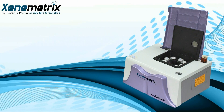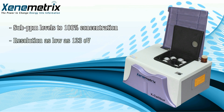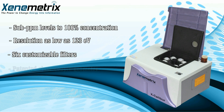Excalibur performs elemental analysis from sub-PPM levels to 100% concentrations. The great performance of the silicon drift detector brings the resolution as low as 123 eV. Its six customizable filters modify the source spectrum for best analytical performance, and patented close-coupled geometry greatly increases the system's sensitivity and improves limits of detection.